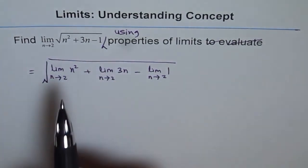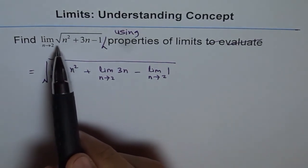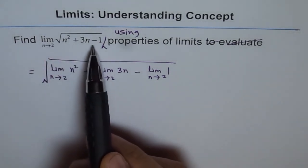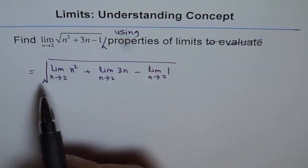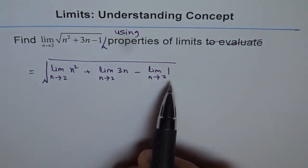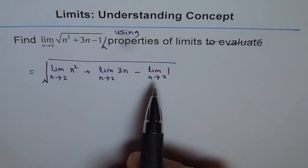So basically, the sum of limits, the product of limits, and the square root of limits all can be combined together. That is what the properties of limits is.